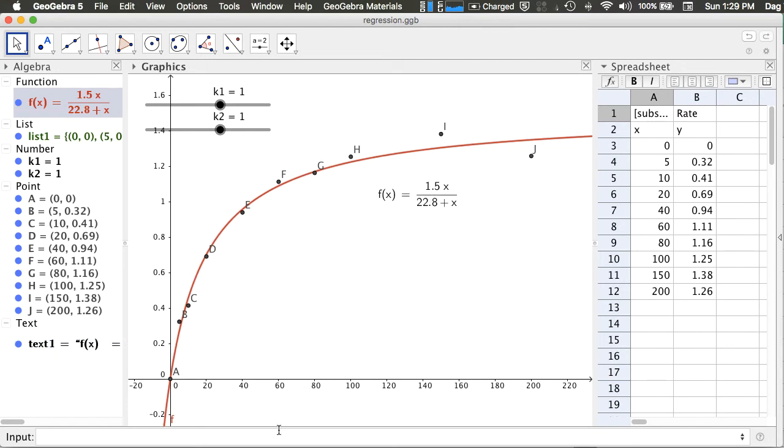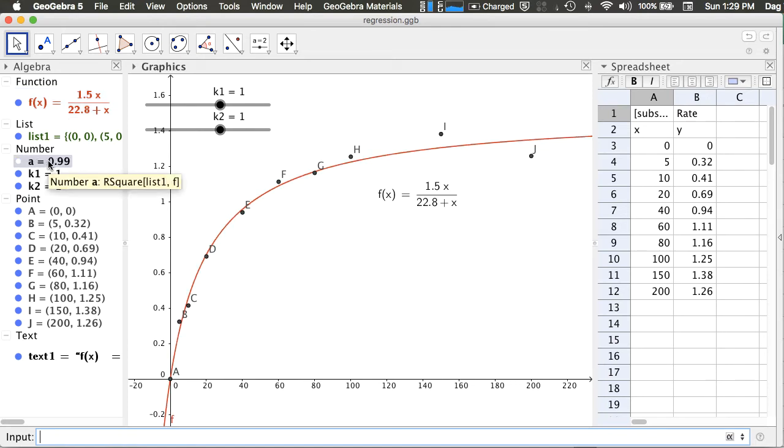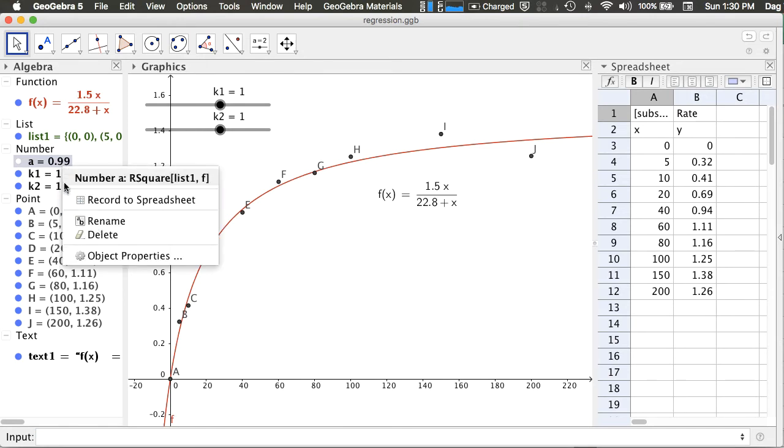We can also calculate the r² of the regression in the input bar using the command r2. And you can also rename it by right-clicking on the number.